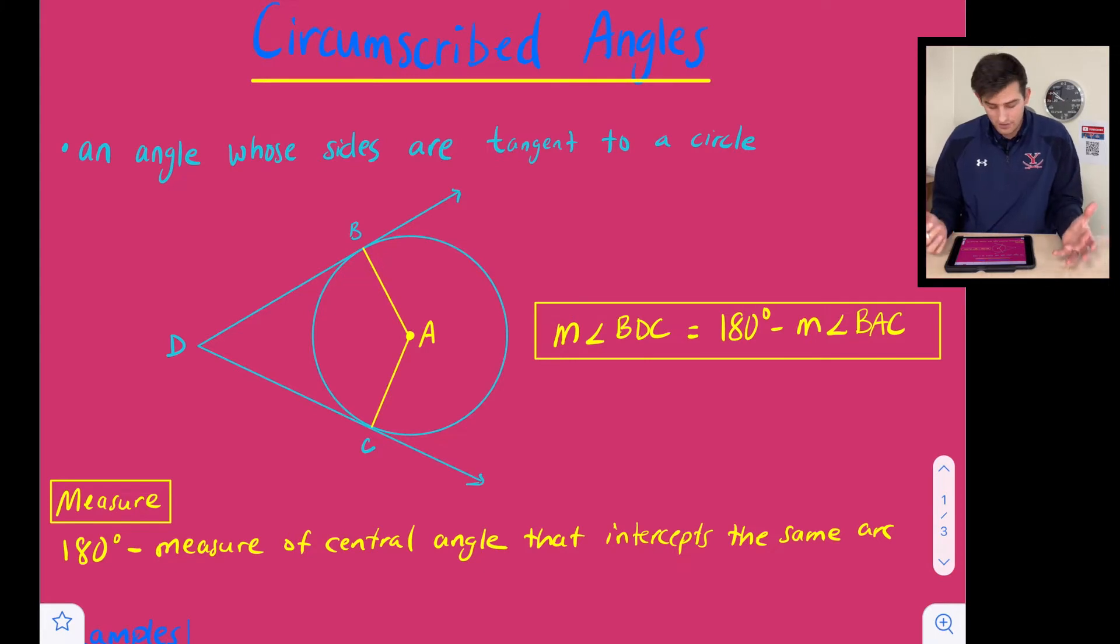So how do we find the measure of a circumscribed angle? Our circumscribed angle is going to be this angle right here where I just put an X. To find that, we're just going to take 180 degrees and subtract the measure of the central angle. So our central angle, once again, is right here. To find the measure of angle X, we would just do 180 minus that central angle.